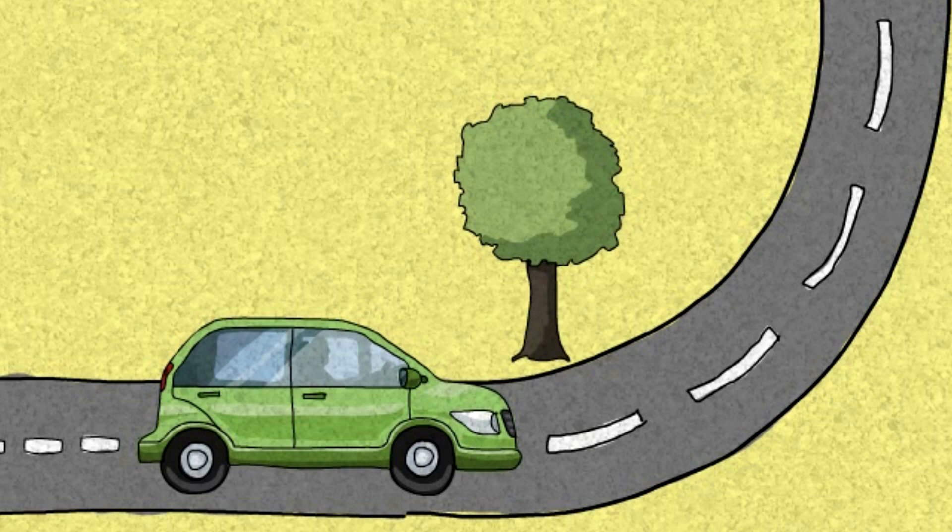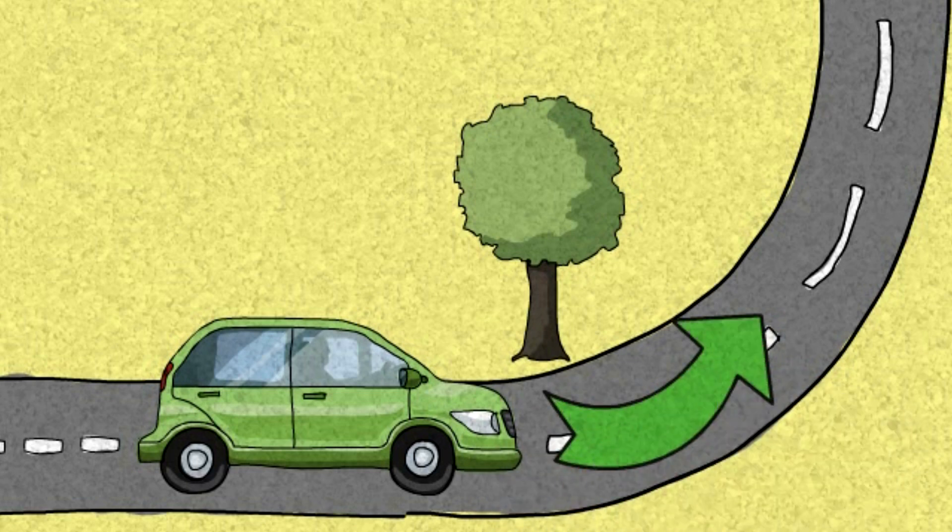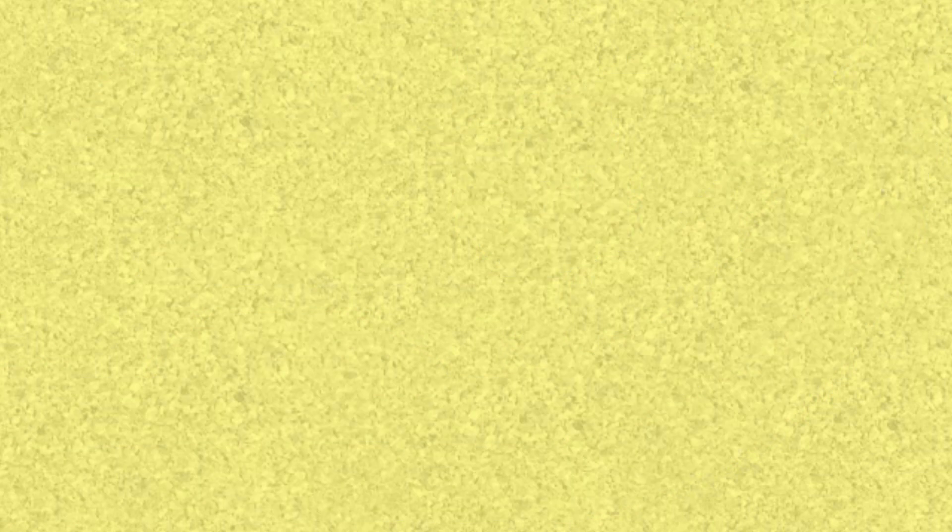Can we say that the existence of trees affect the trajectory of moving vehicles? Of course not. But this tree forces the road to be constructed with a curve in it, and the car follows that path. The tree affected the path the car took, indirectly.